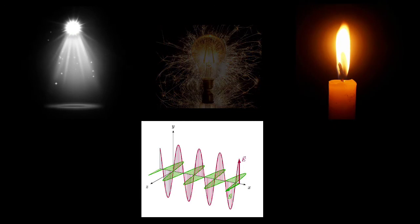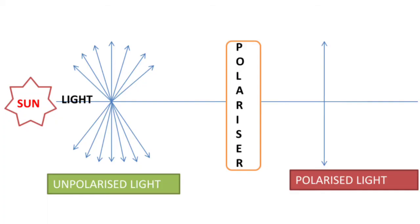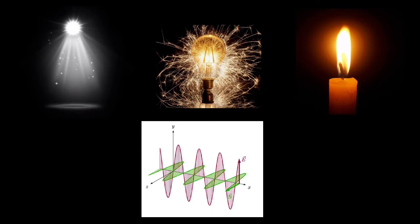Unpolarized light can be transformed into polarized light by using polaroid filters. So these polaroid filters are capable of blocking one of the two planes of vibrations. That is, it may block vertical vibrations or horizontal vibrations, so that it produces an electromagnetic wave of only one plane.